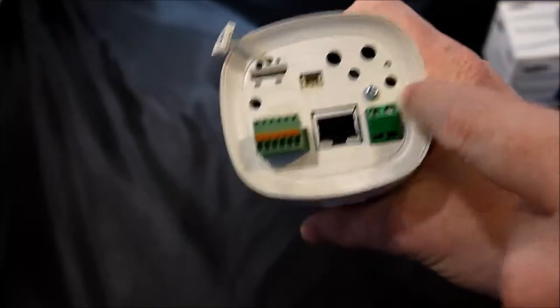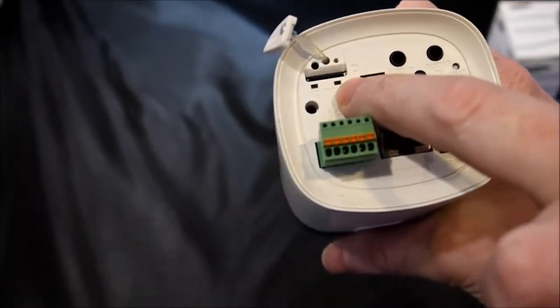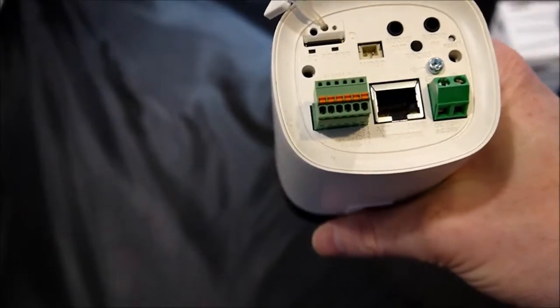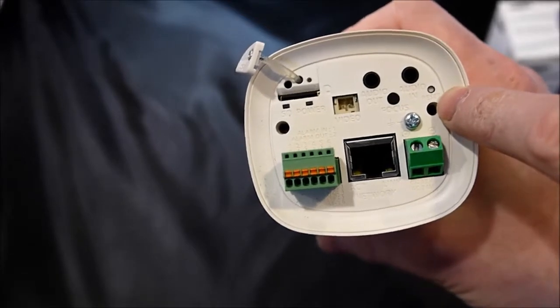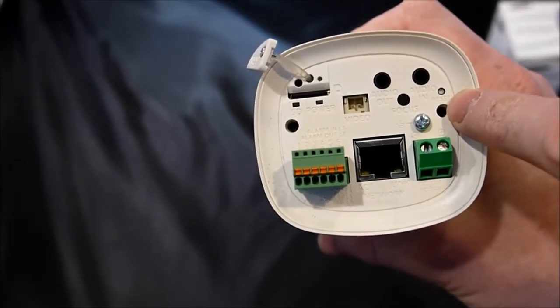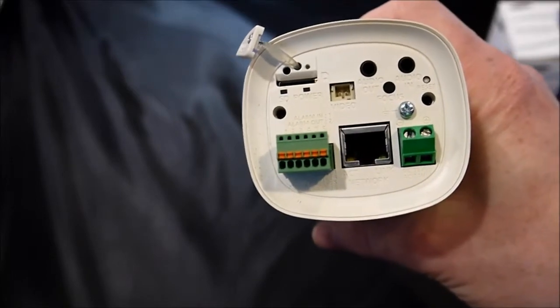And on the back, we also have a ground screw. There are a couple status lights on the camera for power and SD card recording. There's also a reset button. If we need to factory default our camera while the camera's powered up, we push in with a paper clip for five seconds.